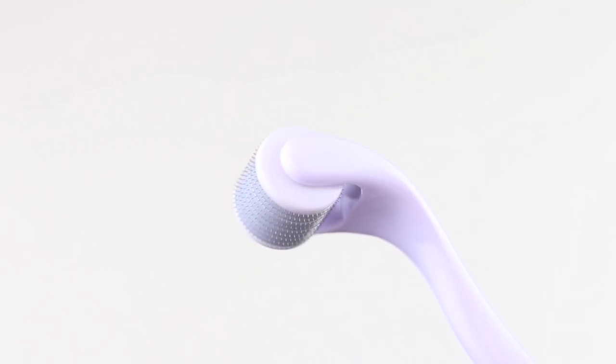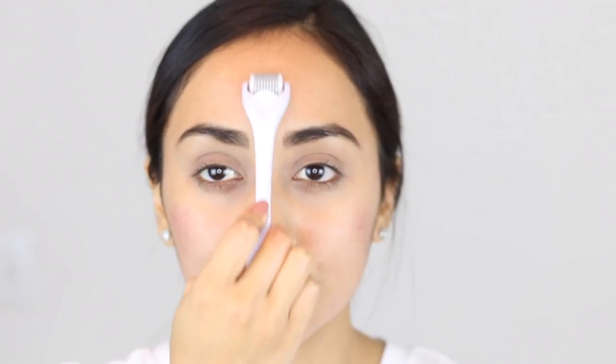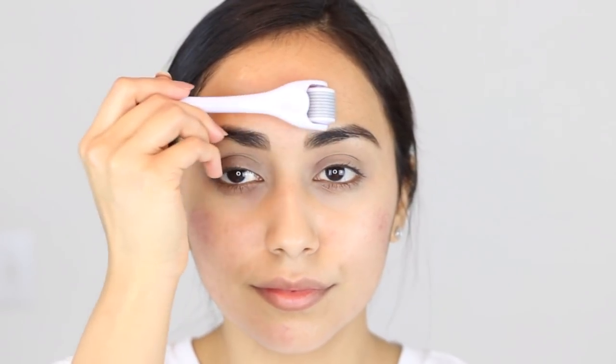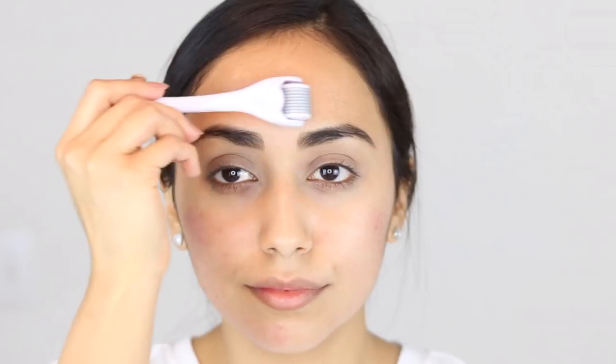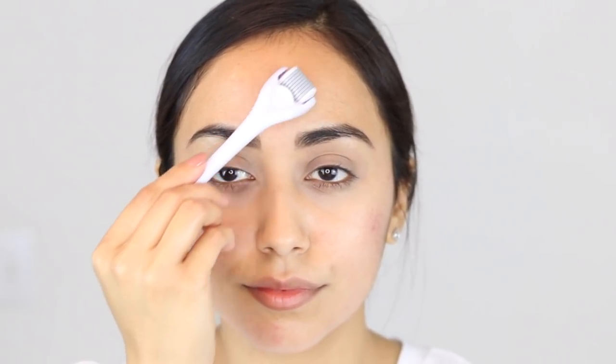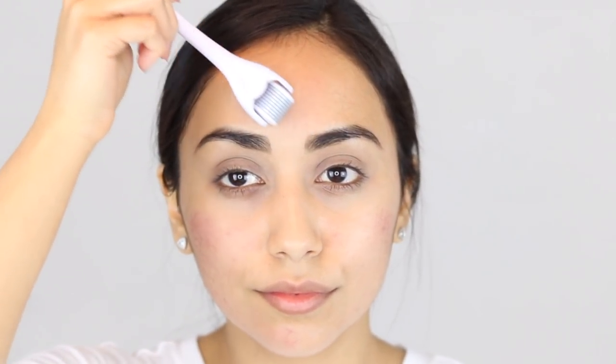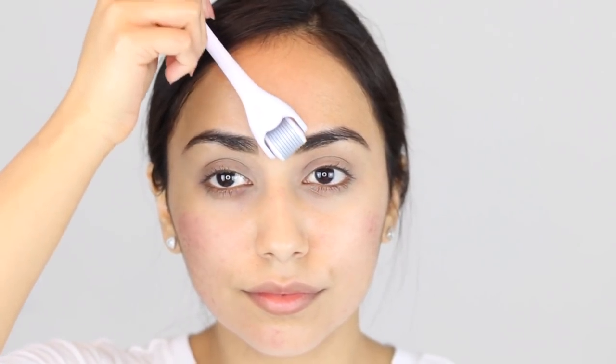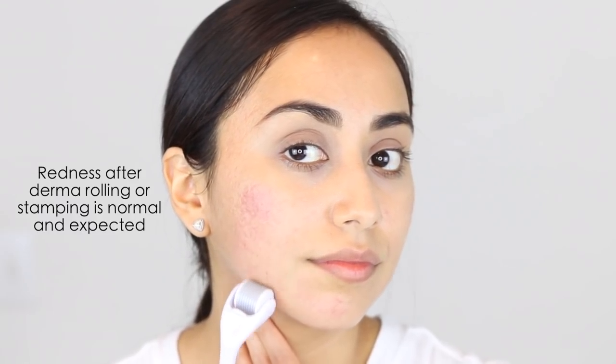Now for the roller, you also want to do this in sections. You just go back and forth in one direction for about five times. You can start vertically, and then you want to do the same thing horizontally, going back and forth about five times, and then again diagonally. This is all in the same section. Once you roll over the entire area in all directions, you can move on to another section and do the same thing.